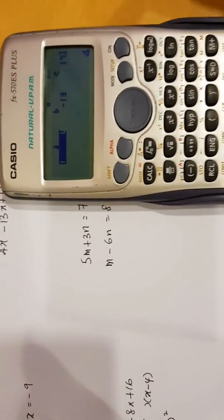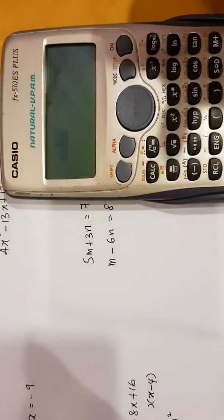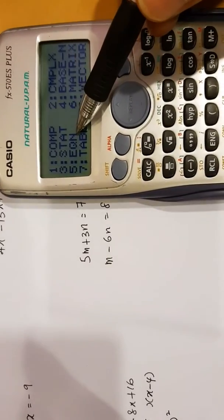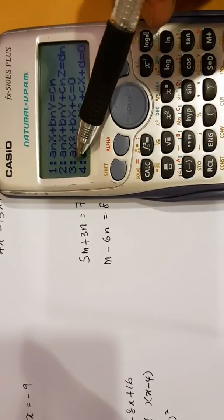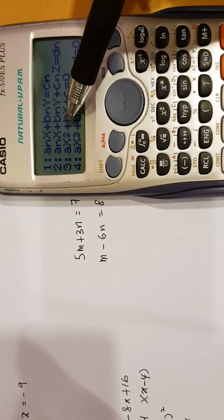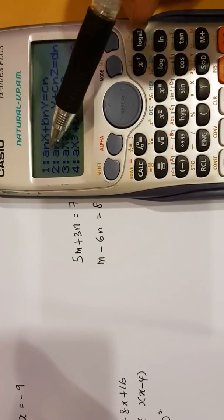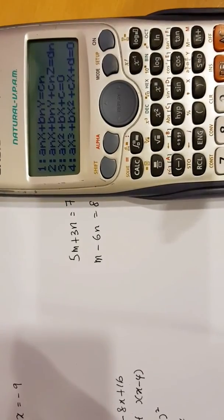The other one is M minus 6N equal to 8. We can use the calculator. The mode is rather similar. I'm going to press AC. Let's press this mode again. Remember, number 5, EQN. I press 5 for EQN. But, this time, we don't press 3. 3 is for quadratic equation because there's an X squared here. We press number 1.